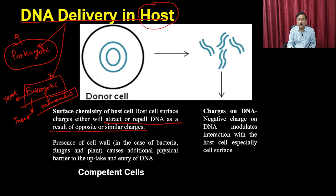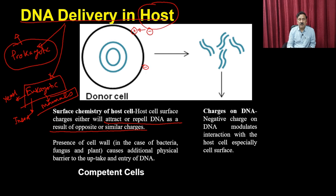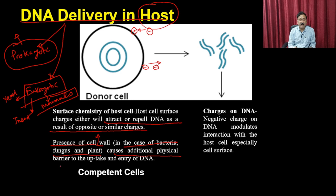The host could be of prokaryotic origin or eukaryotic origin. There are significant differences between eukaryotic and prokaryotic organisms. Within prokaryotes we have discussed E. coli and Bacillus subtilis as hosts, while within eukaryotes we have discussed yeast, insect cell lines, and mammalian cells. It is very important to understand the host, because the surface chemistry of the host will either attract or repel the DNA due to opposite or similar charges.